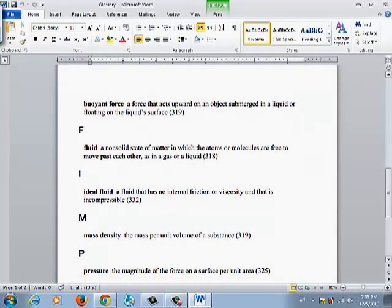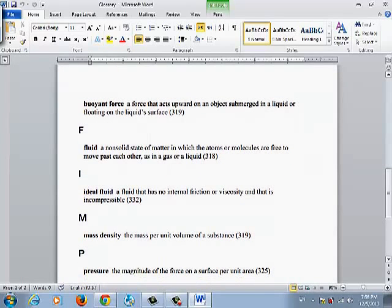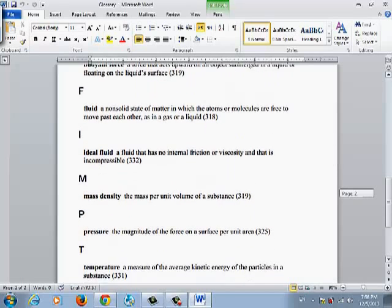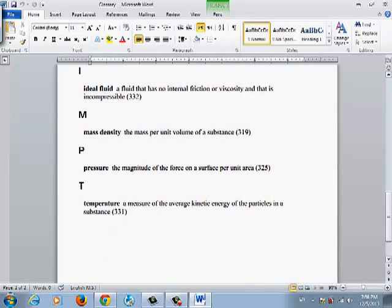The second part of our curriculum is related to fluid mechanics. Buoyant force is the force that acts upward on both submerged or floating objects. You have Fb in two cases, but the values of the Fb is different. Fluid is any non-solid state of matter in which the atoms or molecules are free to move past each other. It could be gas or liquid. Density is the mass per unit volume, measured in kilograms per meter cube or per liter.